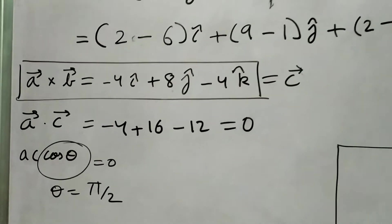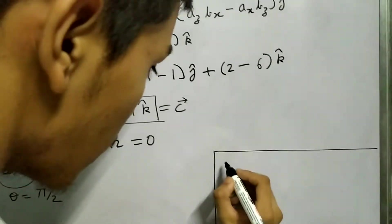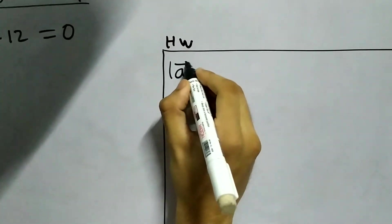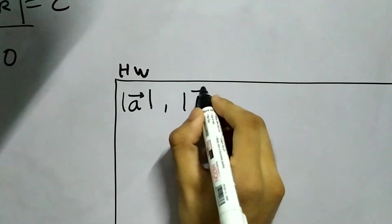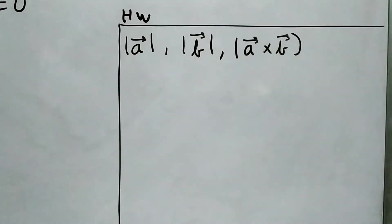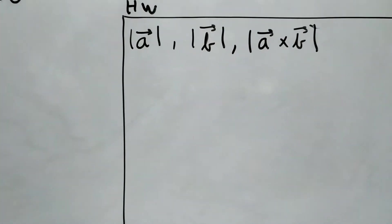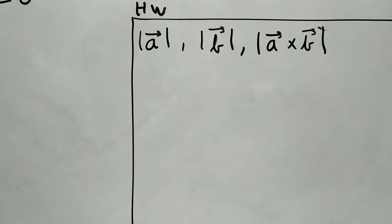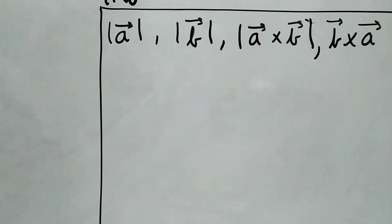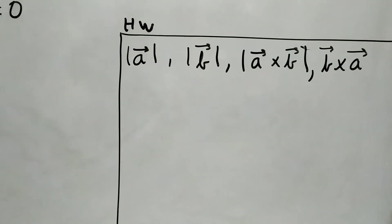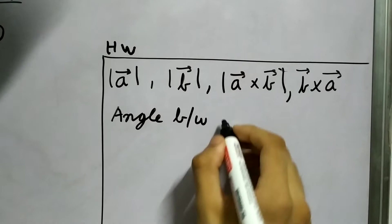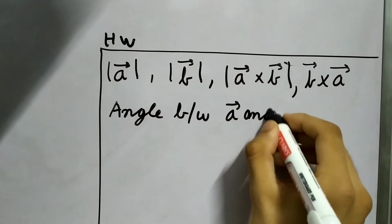Now as a homework I want you to check, evaluate some things. So first, find the magnitude of A. Then find the magnitude of B. Find the magnitude of A cross B. And find B cross A. This was A cross B. Find B cross A.